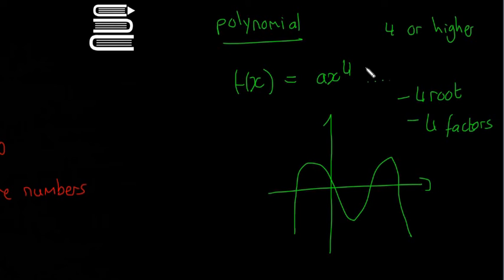To the power of 5, there's going to be five turns, five roots, five factors, etc. That's all I'm going to talk about polynomials. They don't come up super often, but just know they're going to be weird squiggly things.